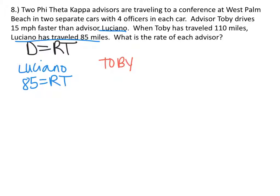Then for Toby, we know that Toby drives 15 miles per hour faster than Luciano and he traveled 110 miles. So the distance for Toby is 110, and that rate is going to be the rate of Luciano plus 15, multiplied by T. We don't know how much time Toby drove.